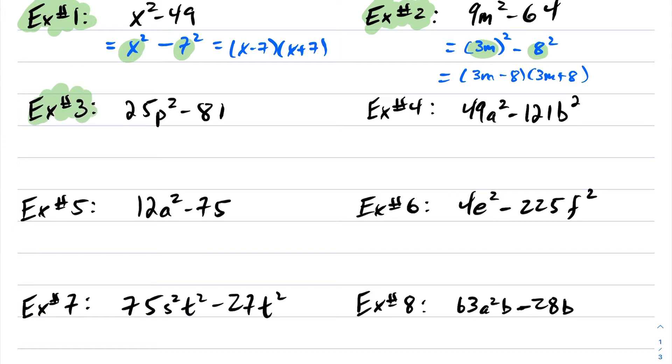Example 3. Again, you want this as a power of 2, so I can rewrite this as (5p)² - 9². Again, here's my x, here's my y. So this will factor into (5p - 9)(5p + 9).